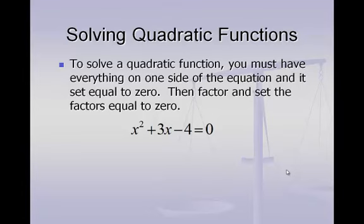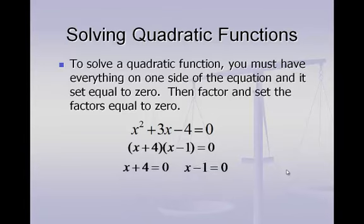In our first example, we have x squared plus 3x minus 4 equals zero. We're going to factor this using the trinomial method we learned where we think about the n number. Here that's a negative 4, and I want to think about things that multiply to make that number negative 4 and what would add up to make a positive 3. The special numbers for those are x plus 4 and x minus 1. Now I take each one of those factors and set them equal to zero and solve for x.